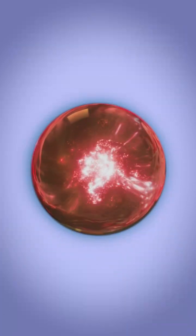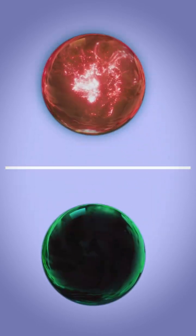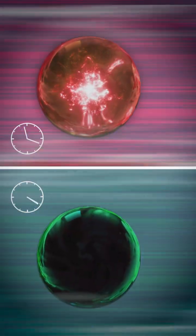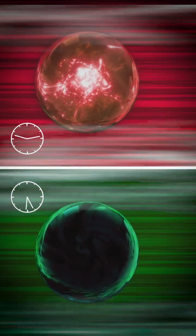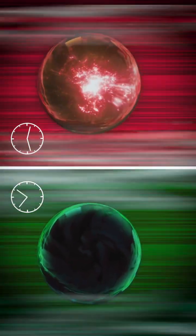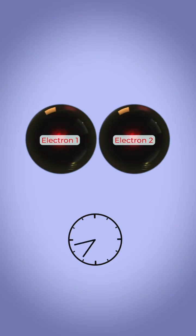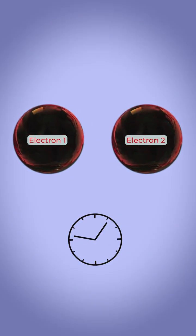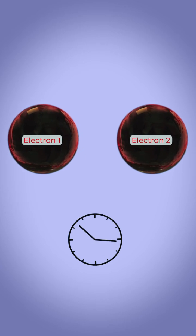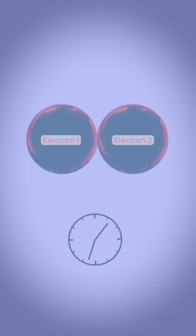This led to the idea that antimatter is just ordinary matter but going backward in time. That would explain why antiparticles have an opposite charge. And by that logic, if two electrons repel each other going forward in time, they attract each other going backward in time.